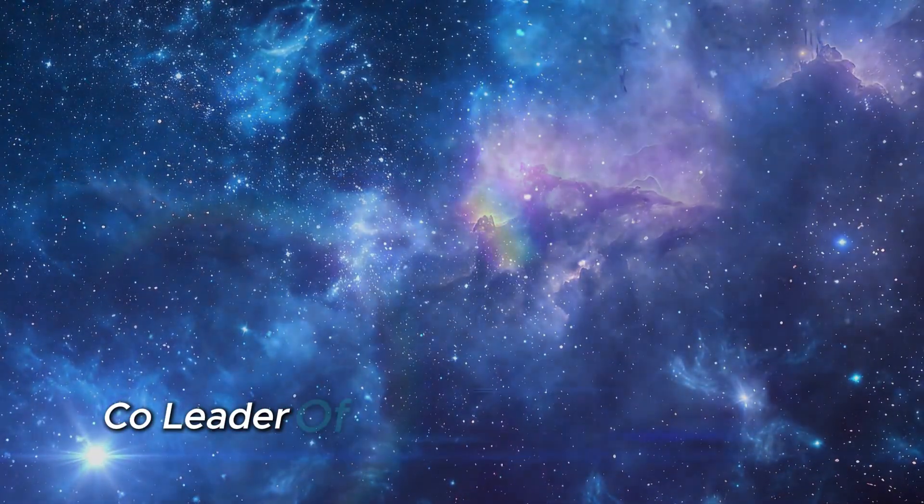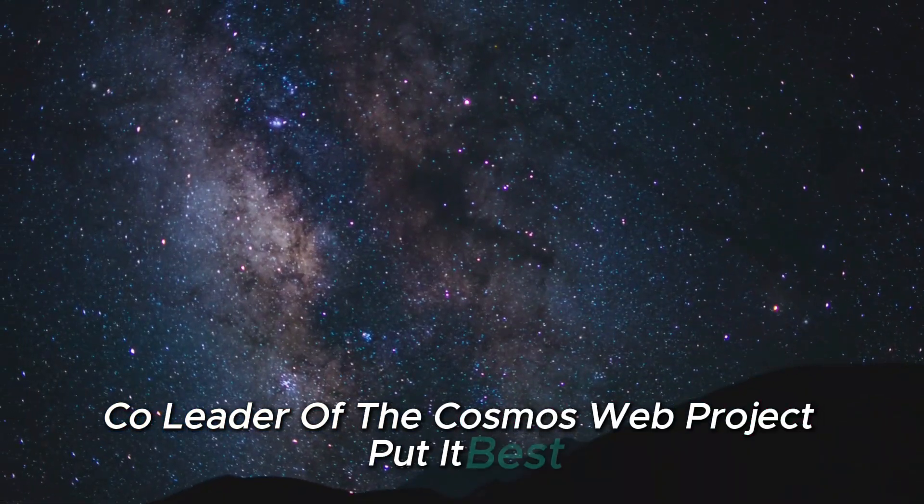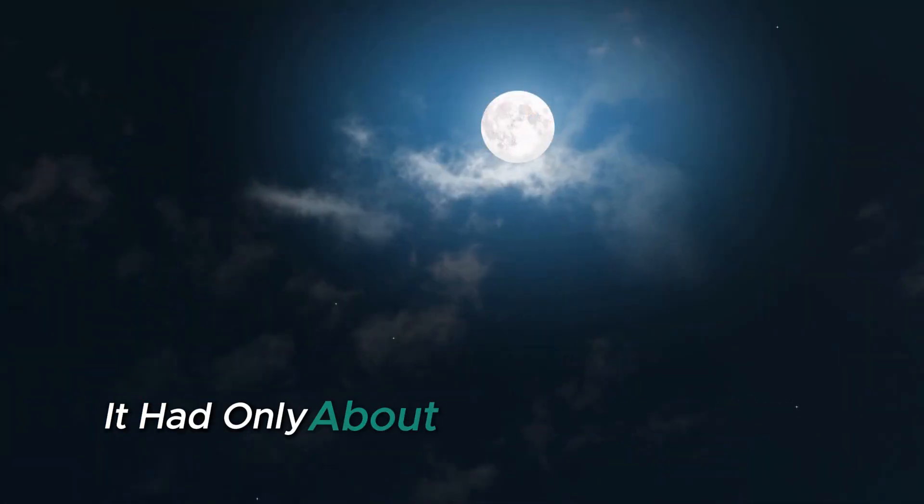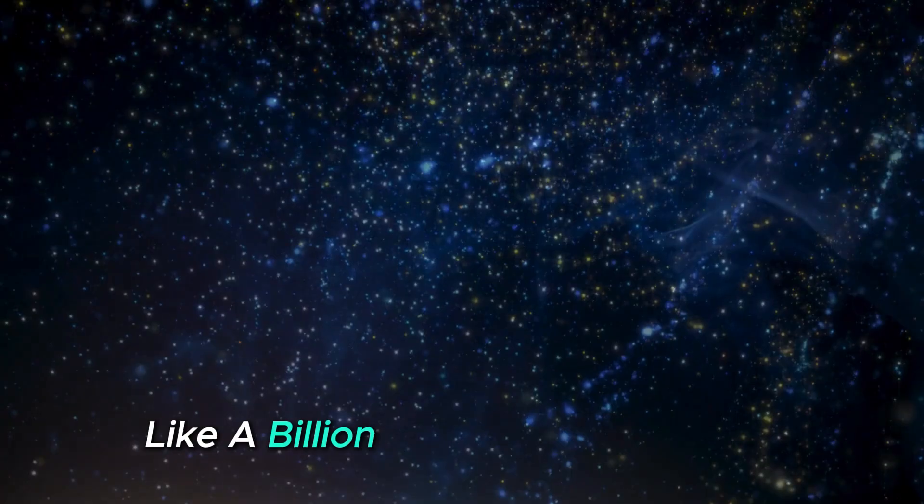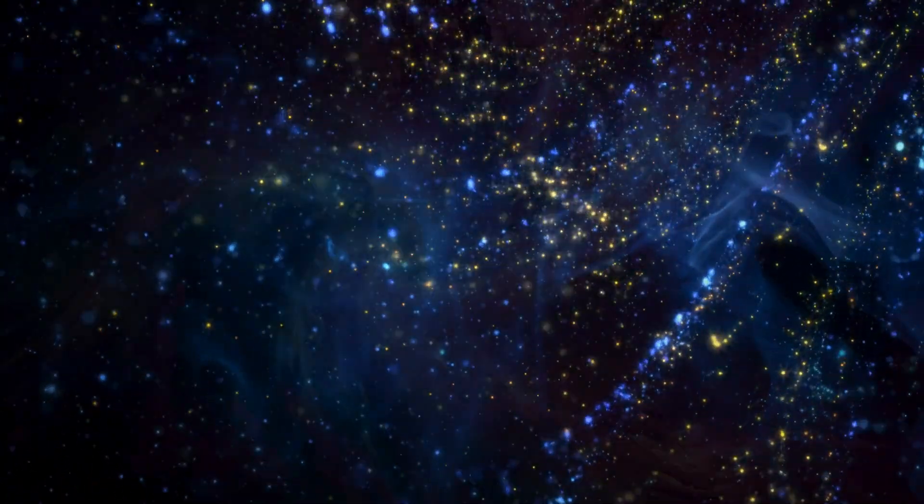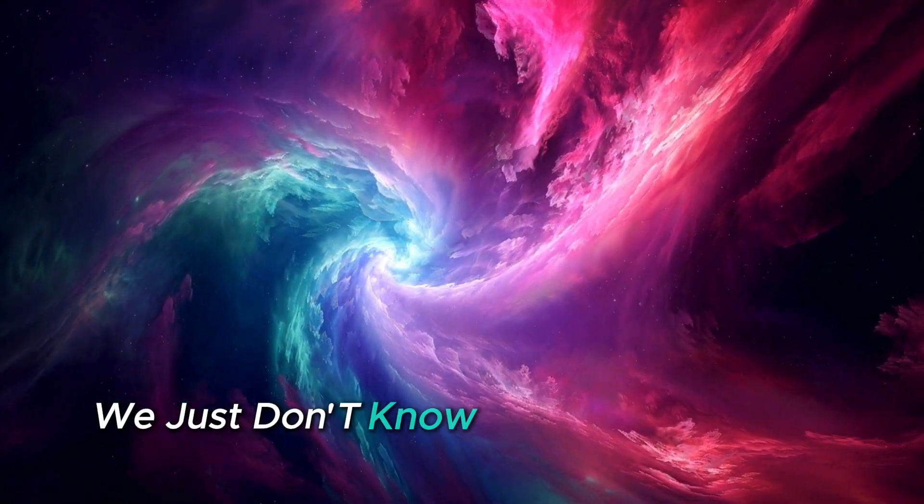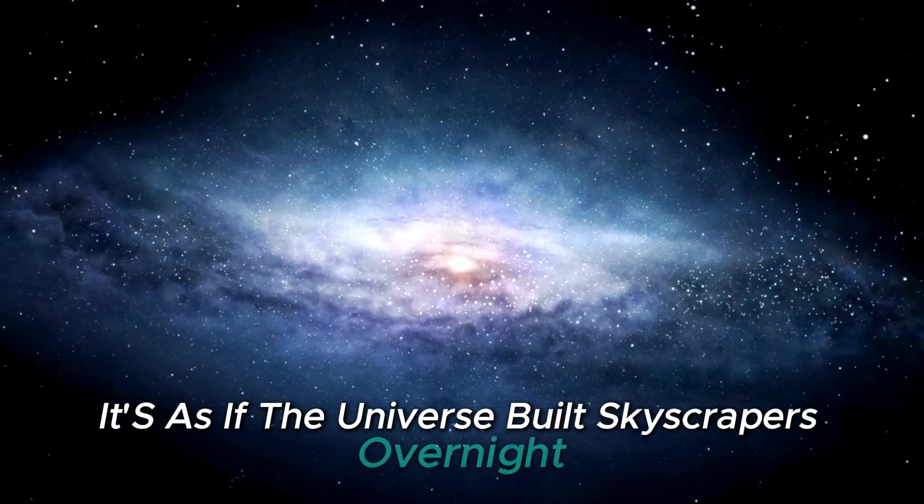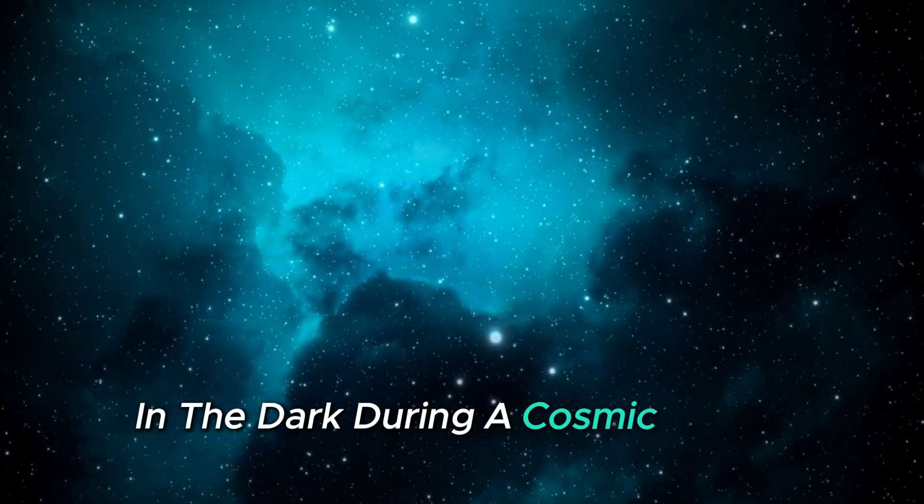These aren't just scattered stars, they're fully formed cosmic metropolises, blazing with light and heavy with metals, suggesting multiple generations of stars formed within a mere 300 million years of the Big Bang. Caitlin Casey, co-leader of the Cosmos Web Project, put it best: the universe was producing too much light too early. It had only about 400 million years to form something like a billion solar masses of stars. We just don't know how to make that happen. It's as if the universe built skyscrapers overnight, in the dark, during a cosmic power outage.